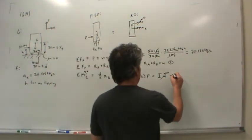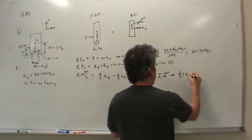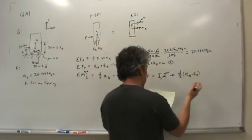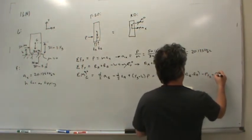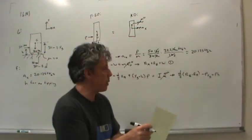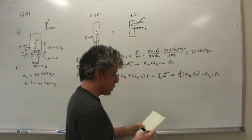And so what this leads me to is that d over 2 times rb minus ra, just collecting or factoring out d over 2, minus pyg equals ph. Now the reason I did it this way is because I'm interested in the ranges of h. I'd like to solve for h from this equation.